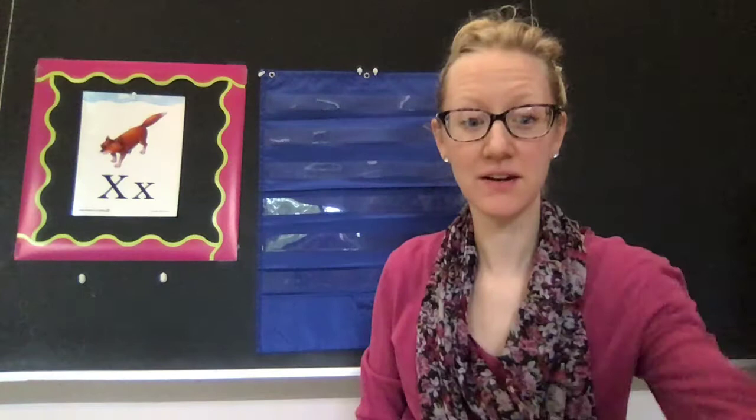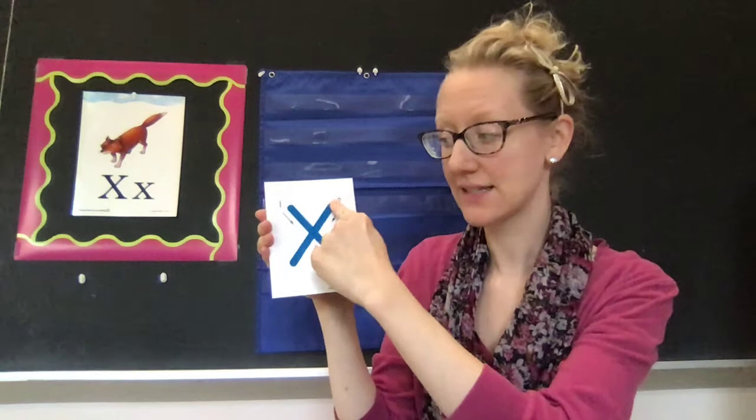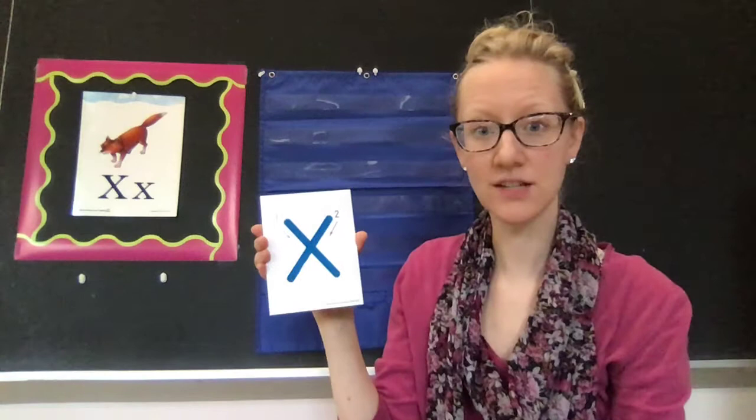Let's learn how to make a capital X. You're going to start at the top and slant down to the bottom line. Then come up to the top of the other side and slant backwards down to the bottom near the beginning. So it kind of looks like just a cross. You slant down to the bottom and slant down to the bottom.